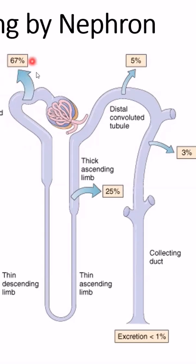Maximum, the largest share of sodium reabsorption takes place here, 67%. Then you have thick ascending limb of loop of Henle, in which 25% of sodium is reabsorbed.